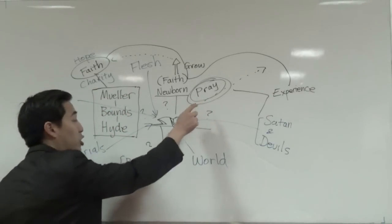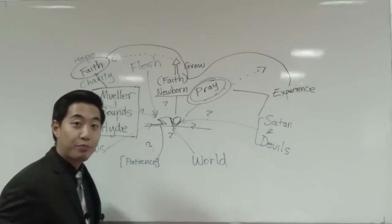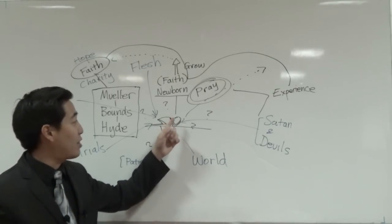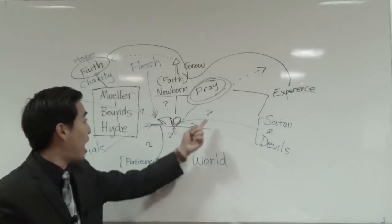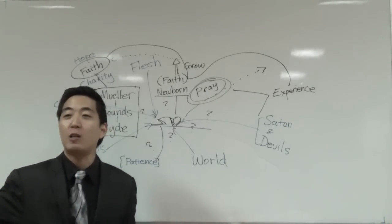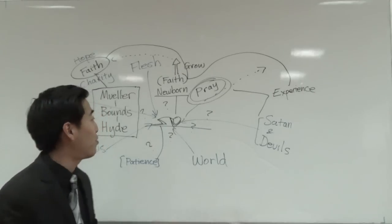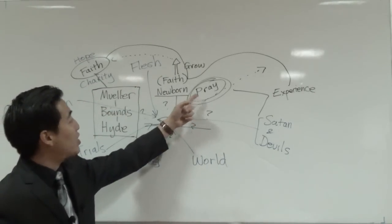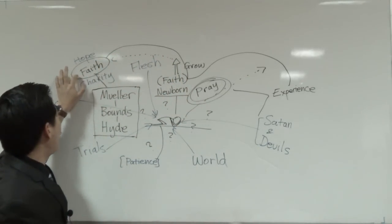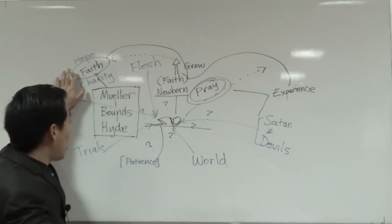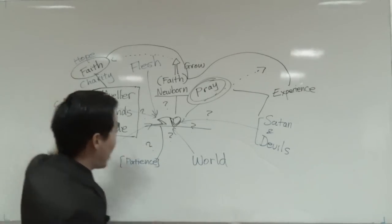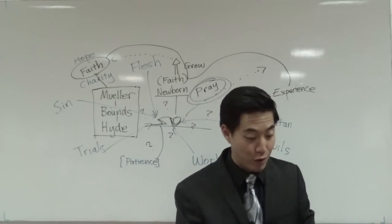What happens is, in verse 16, Confess your faults one to another, and what? Pray one for another, that ye may be healed. The effectual, fervent prayer of a righteous man availeth much. Elias was a man subject to like passions as we are, and he prayed earnestly that it might not rain, and it rained not on the earth by the space of three years and six months. And he prayed again, and the heaven gave rain, and the earth brought forth her fruit. Look at this. Notice right here, what goes along with the subject of patience and trials is also prayer.